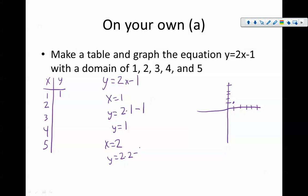And we're going to go with x equals 2, which is y equals 2 times 2 minus 1, which is 4 minus 1 or 3. So that's going to be at 2, 3. And then I got x equals 3, and that's going to be y equals 2 times 3 minus 1, which is 5.